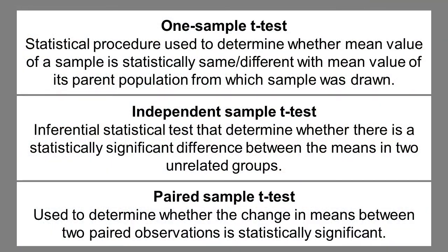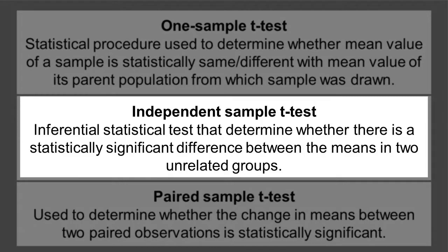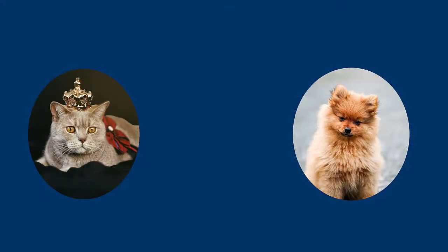The more commonly used t-test would be the independent sample t-test. It is an inferential statistical test that determines whether there is a statistically significant difference between the means in two unrelated groups. In simple words, we want to compare two different groups, such as dogs and cats.